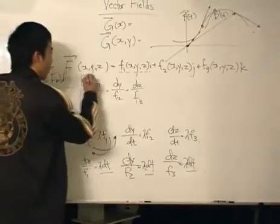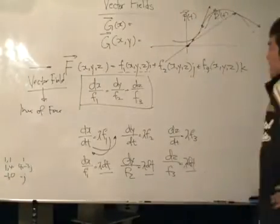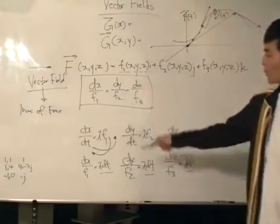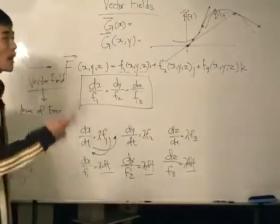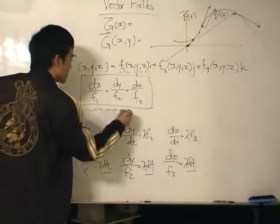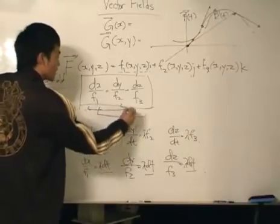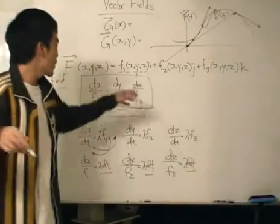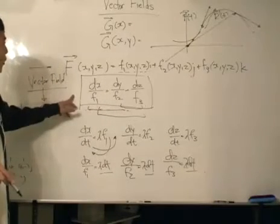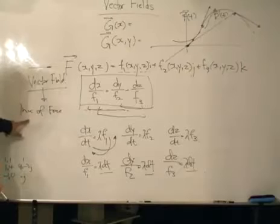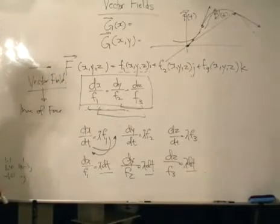The parameter t is out. This is useful because in solving for x, y, and z, I can isolate these pairs of terms, integrating both sides with respect to whatever is on top. This is how we go from the vector field to the line of force using this differential equation and then integrating.